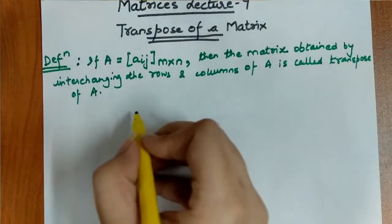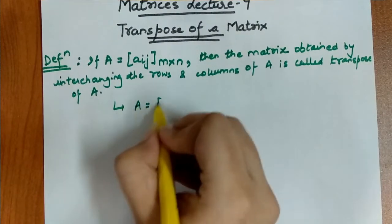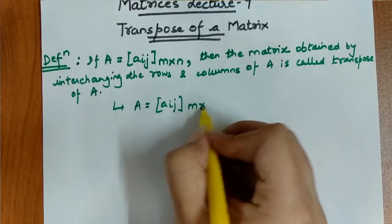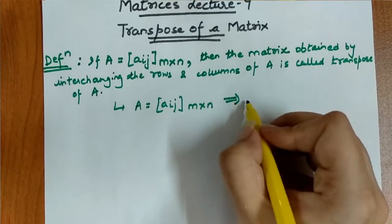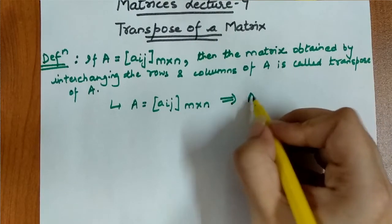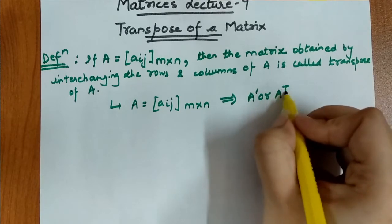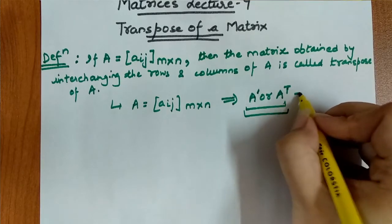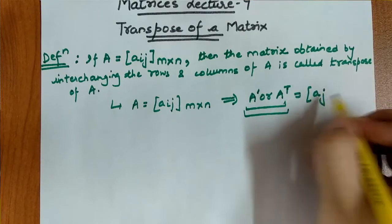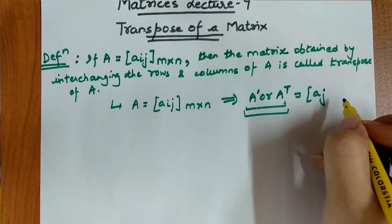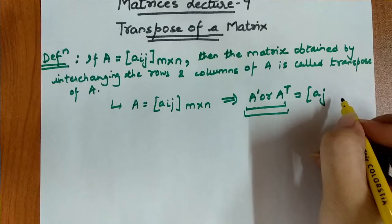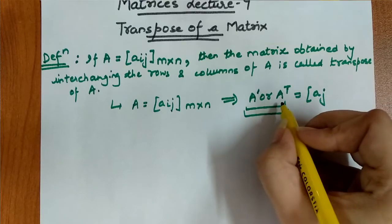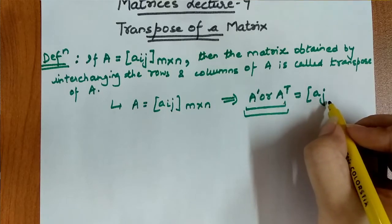If we have a matrix A with elements a_ij and order m cross n, then the transpose of A is denoted as A dash or A with superscript T. The transpose matrix is obtained by interchanging the rows and columns, and its elements will be represented as a_ji.